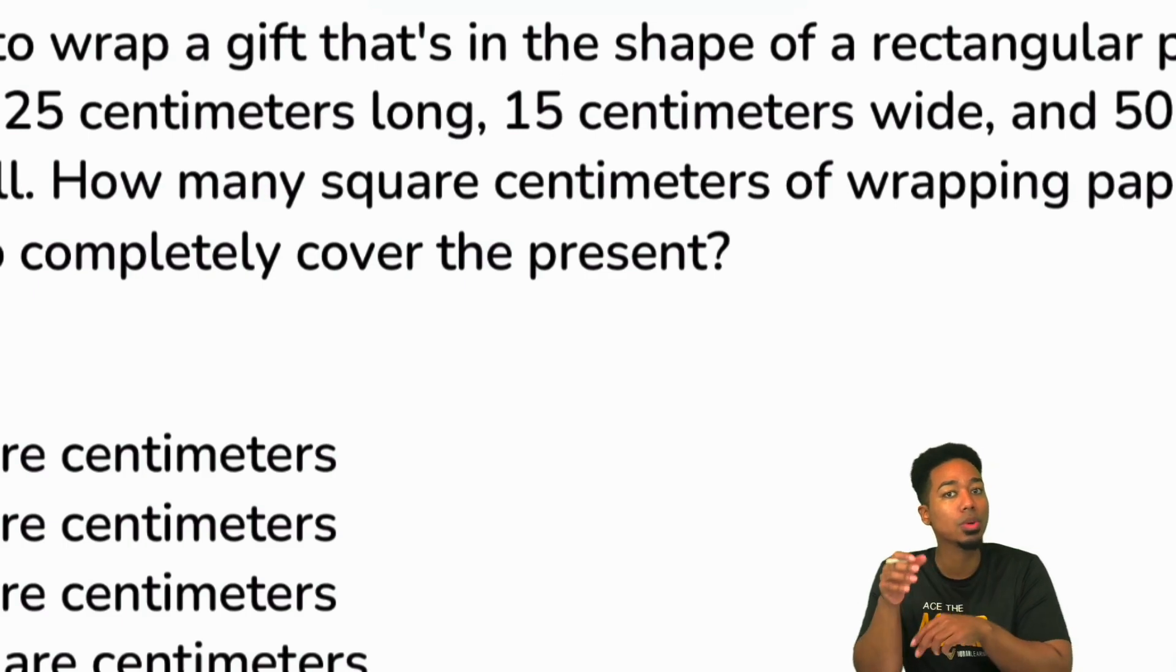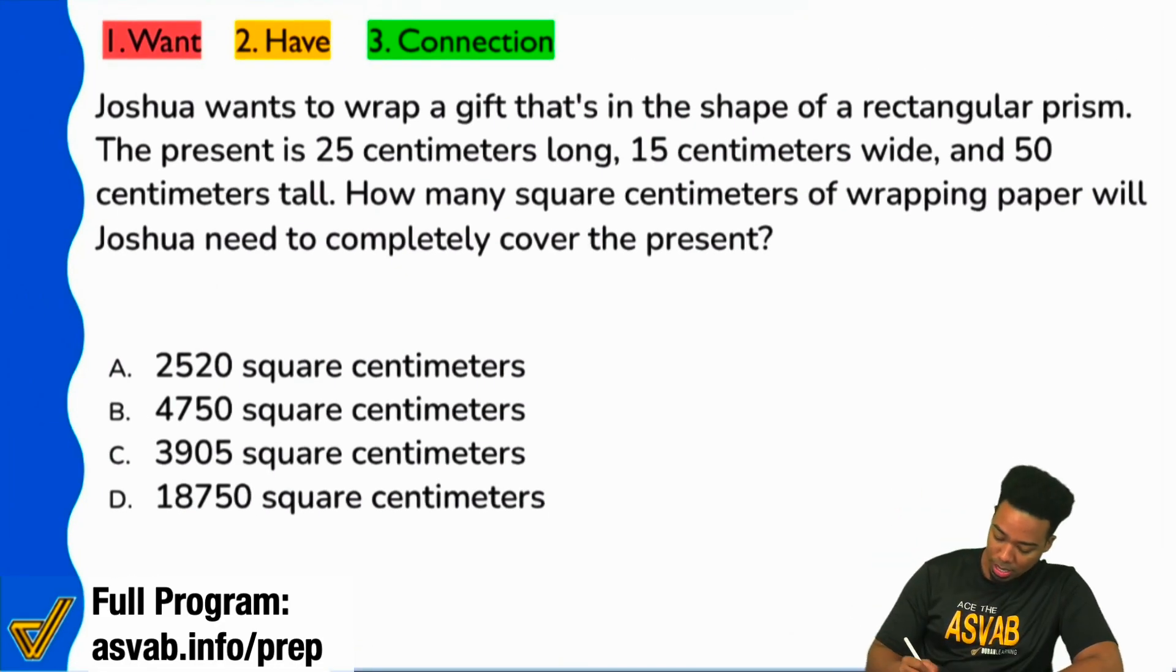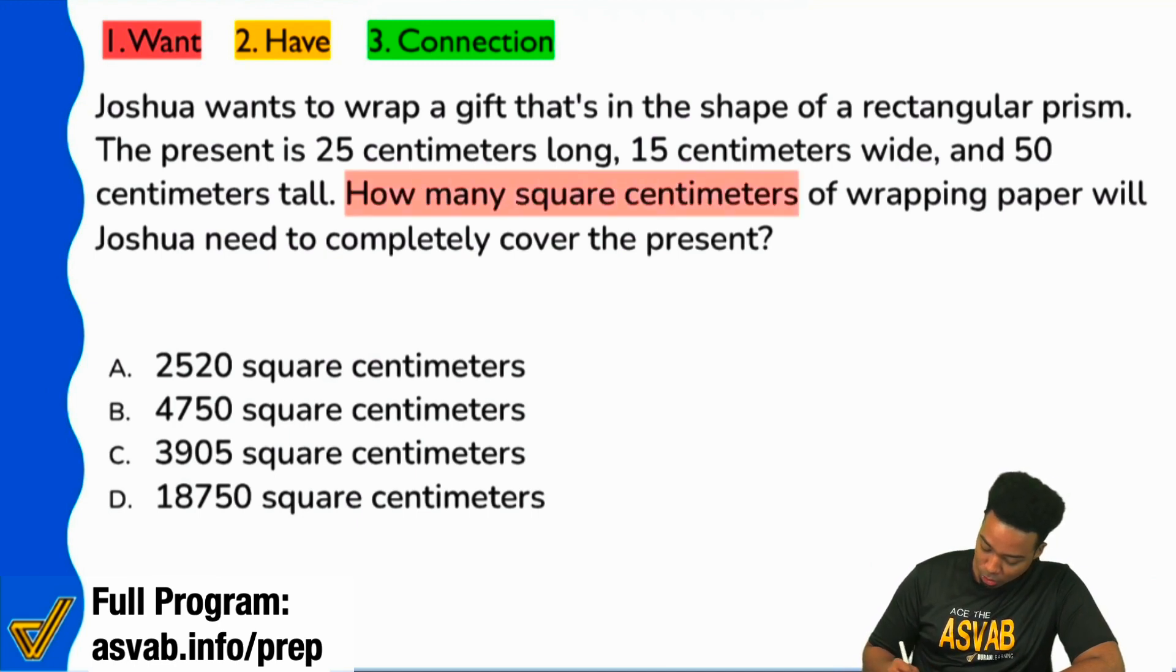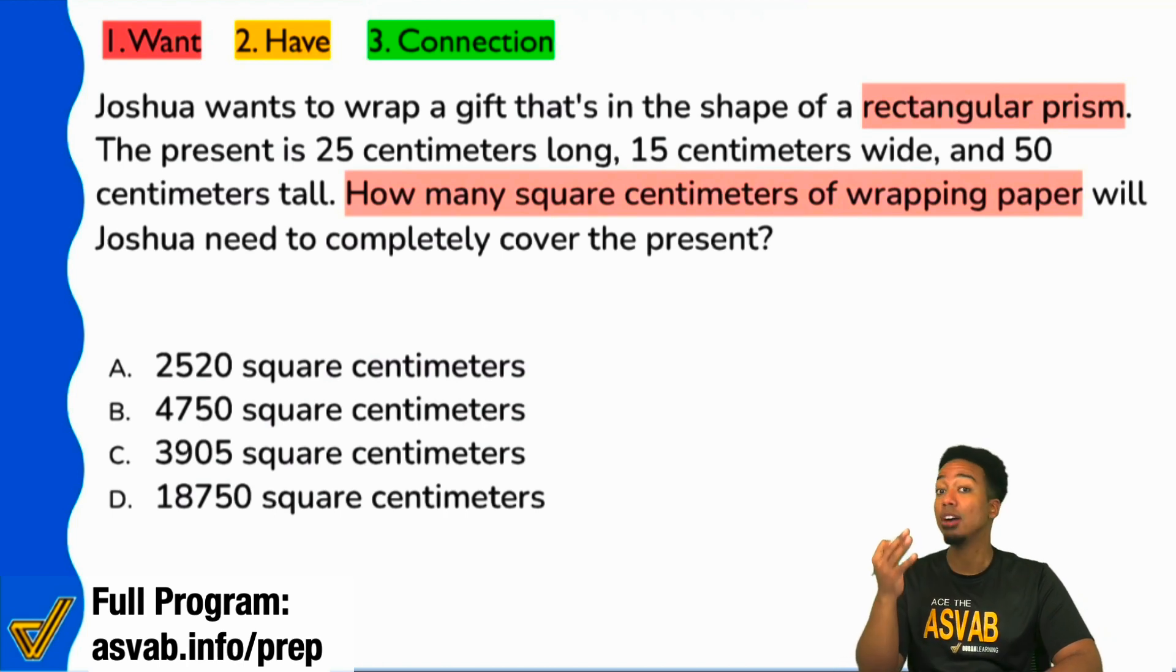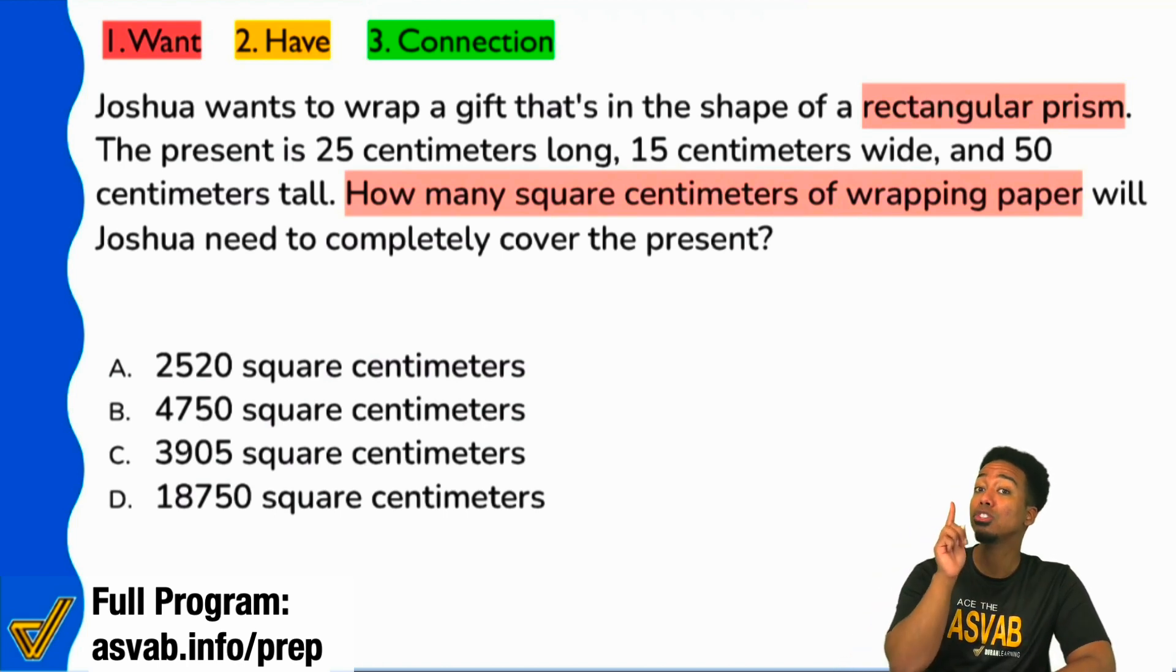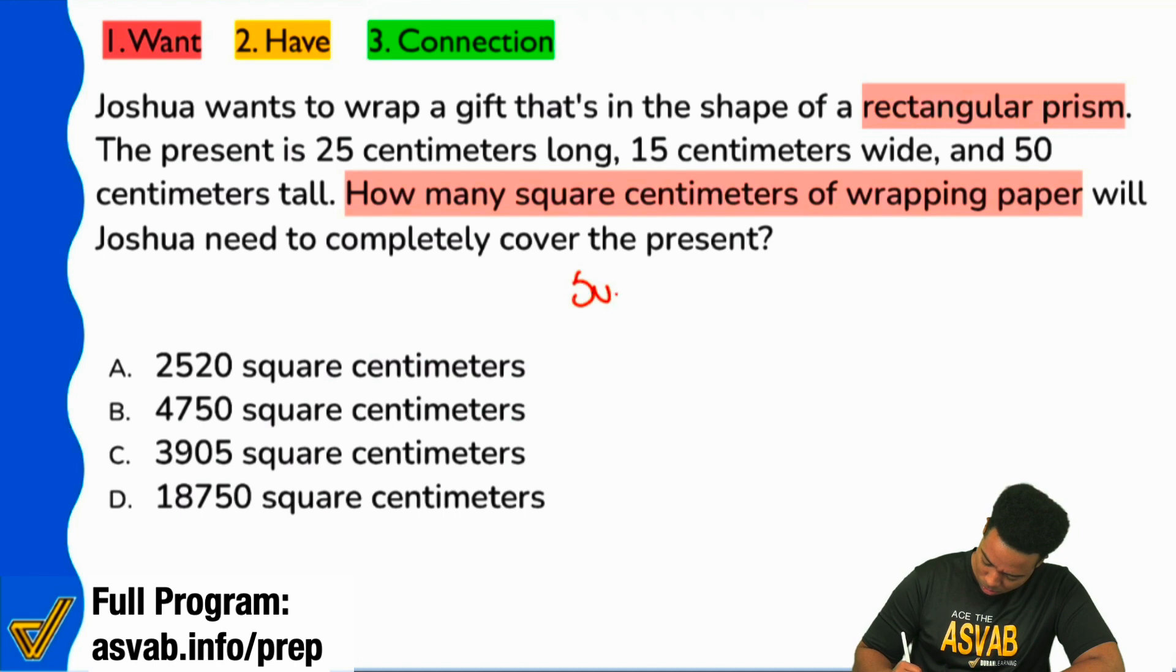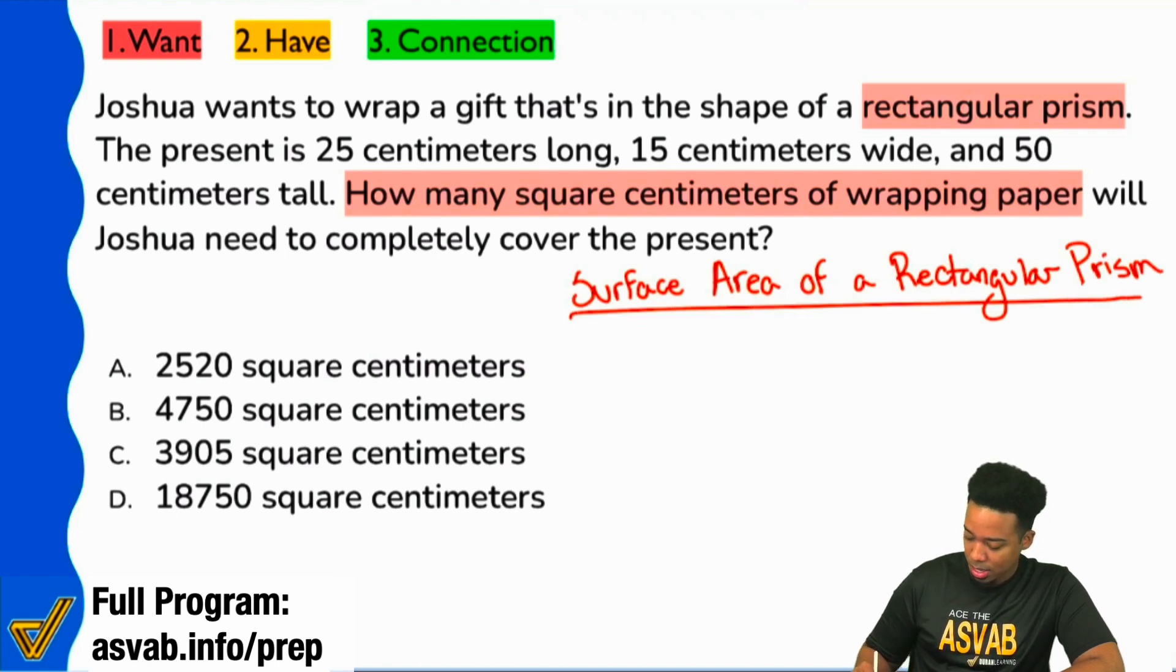Because we're dealing with not a two-dimensional object, we're dealing with a three-dimensional object, they say right over here, again, how many square centimeters of wrapping paper? We're dealing with a rectangular prism. We're dealing with a 3D object. Whenever you're trying to find area of a 3D object, that's called surface area. Does that sound familiar to anybody? Okay. Kind of? Yeah? Okay, cool. So, what we need to know is the surface area of a rectangular prism.